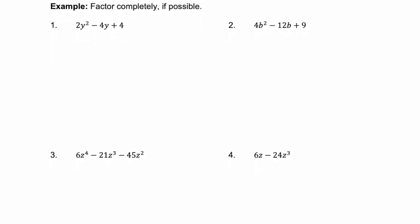We're going to factor completely, if possible. Number one: 2y squared minus 4y plus 4. First step — do we have a GCF? Of course we do. We have a GCF of 2. If we factor out the 2, we get the polynomial y squared minus 2y plus 2.